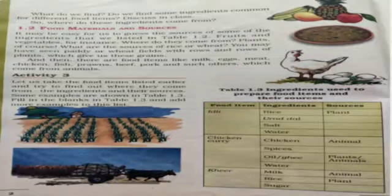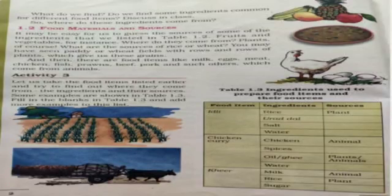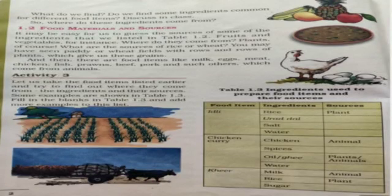In activity 3, a table shows ingredients and their sources. For making idli you need rice, urad dal, salt, and water — all four items come from plants, meaning a plant source. So generally we can say that we get food from both plants and animals.